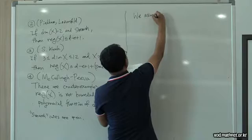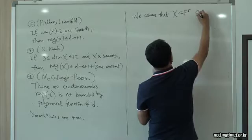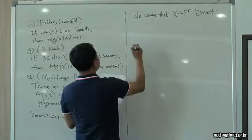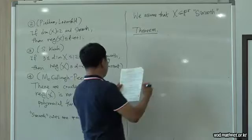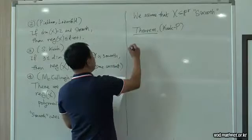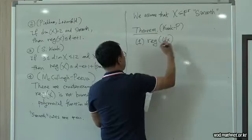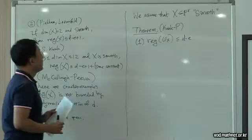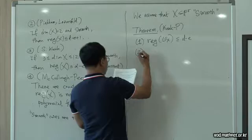From now on, we assume that X is smooth. The first theorem I want to state is about the regularity of the structure sheaf. We show that the regularity of the structure sheaf is bounded by D minus E when X is smooth.